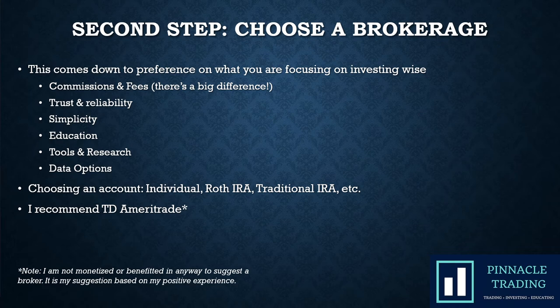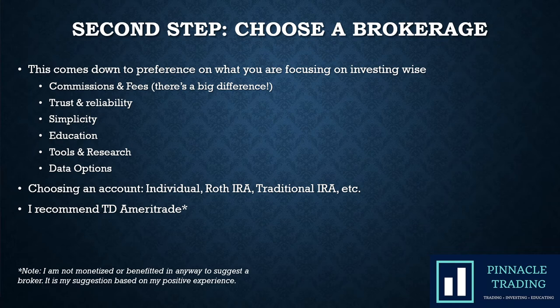They also have paid data options if you want more market research. When choosing an account, an individual taxable account is taxed based on your tax bracket — short term vs. long term gains — and you can look that up on Google. A Roth IRA or Traditional IRA each have their own rules and differences. If you're younger than 18, you can open a custodial account, which your parents can approve. I recommend TD Ameritrade, but look through the bullet points and choose whichever brokerage fits your needs.